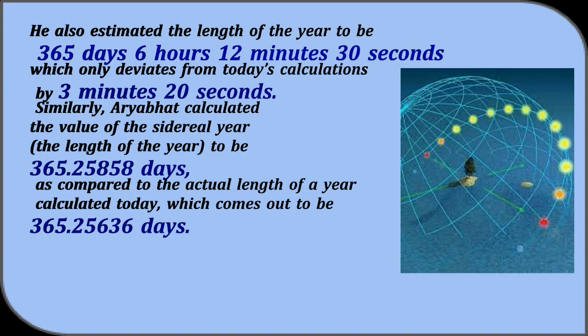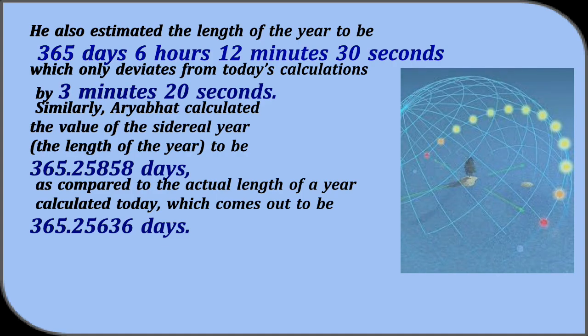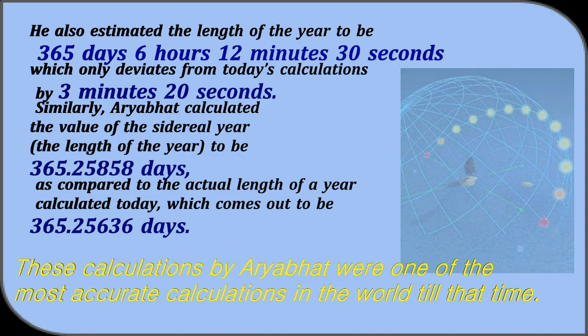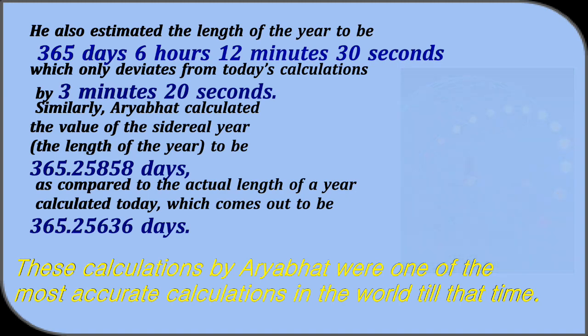Similarly, Aryabhata calculated the value of the sidereal year, the length of the year to be 365.25858 days. As compared to the actual length of the year calculated today, which comes out to be 365.25636 days. These calculations by Aryabhata were one of the most accurate calculations in the world till that time.